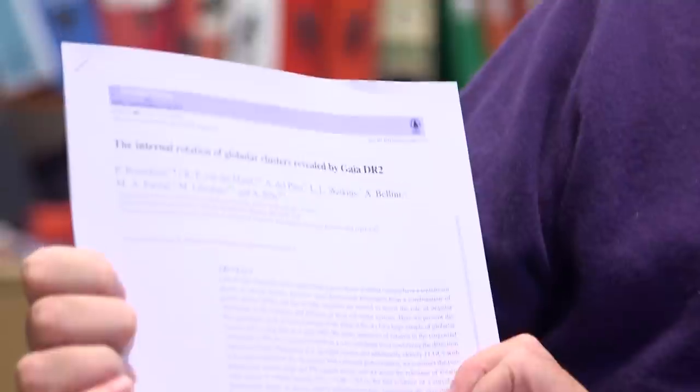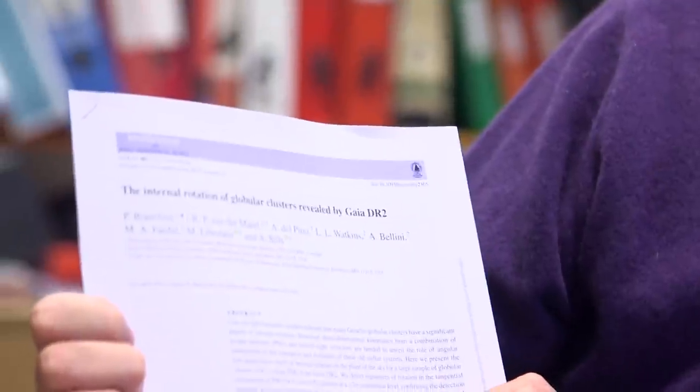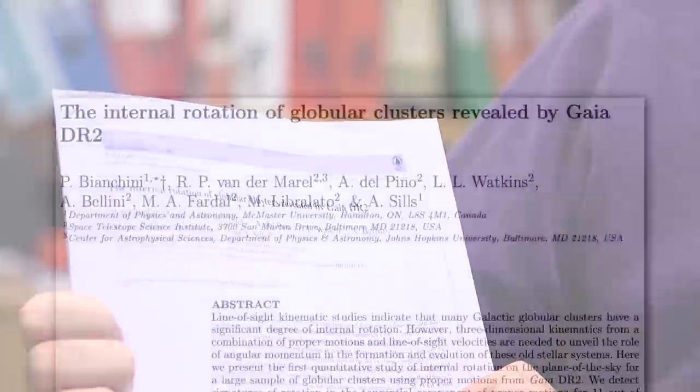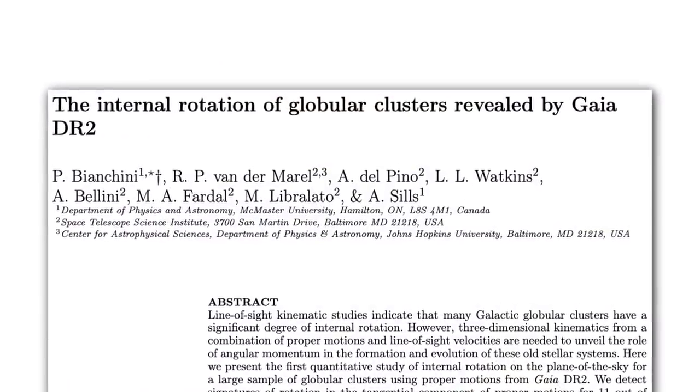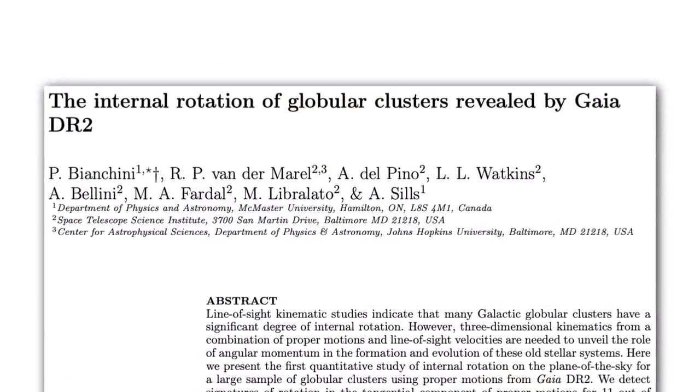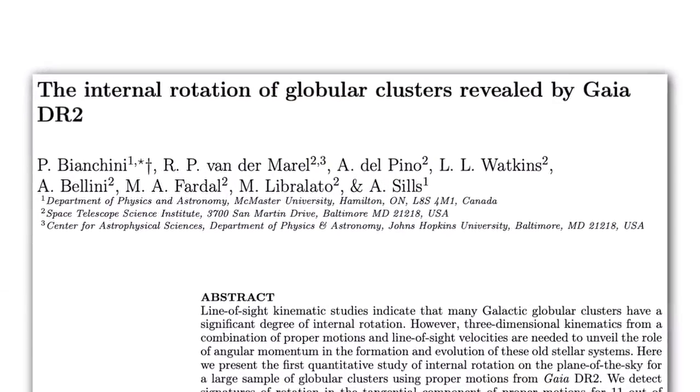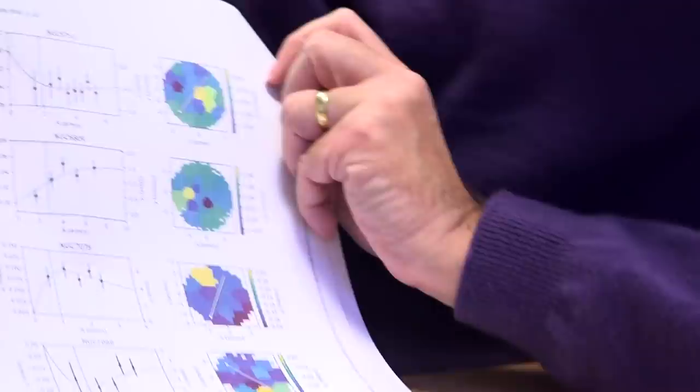So for the first time ever, we're not just restricted to the motions of stars away from us or towards us — we can actually see the movement of the stars on the plane of the sky. Gaia's second data release has enough data that we can monitor about 8,000 stars in this globular cluster and see how they're moving, and actually tell for the first time ever whether this thing is actually rotating.